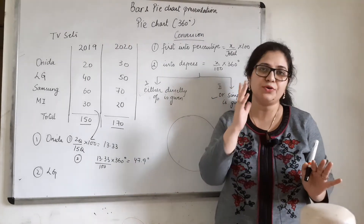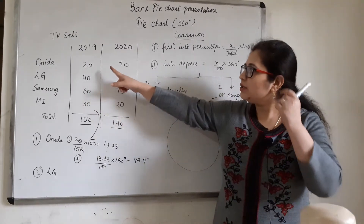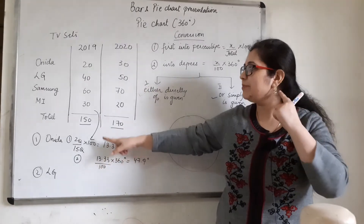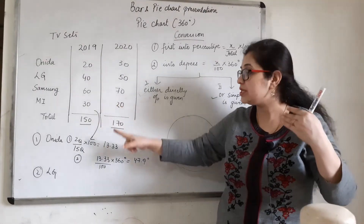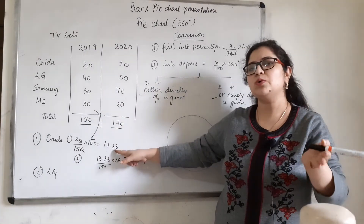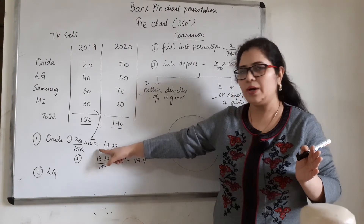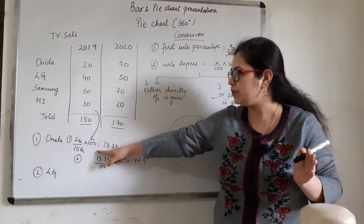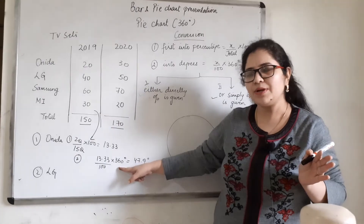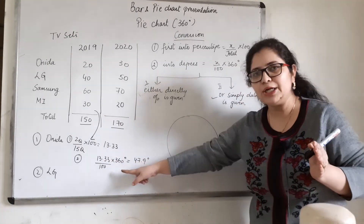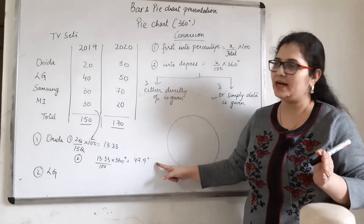Straight away go to the 360-degree formula. Let's do it. I have solved for Onida for 2019. Because this data is in direct numbers, not in percentages, I am going to convert it first into percentages and then into degrees. X by total into 100 — which is 20 by 150 into 100 — giving 13.33%. Now we convert to degrees: 13.33 upon 100 into 360 degrees, which gives 47.9 degrees.